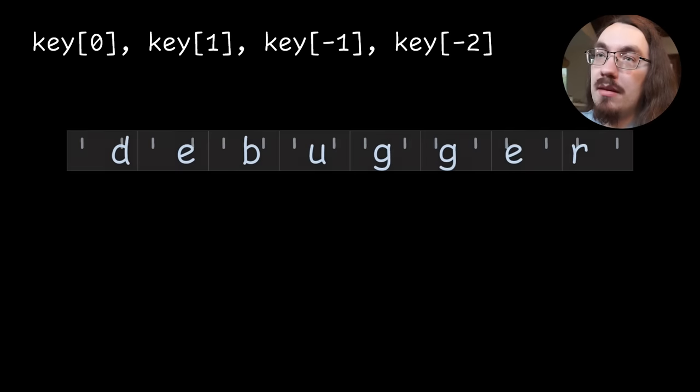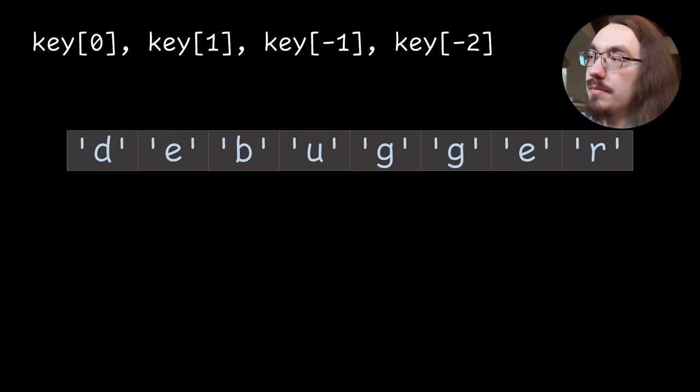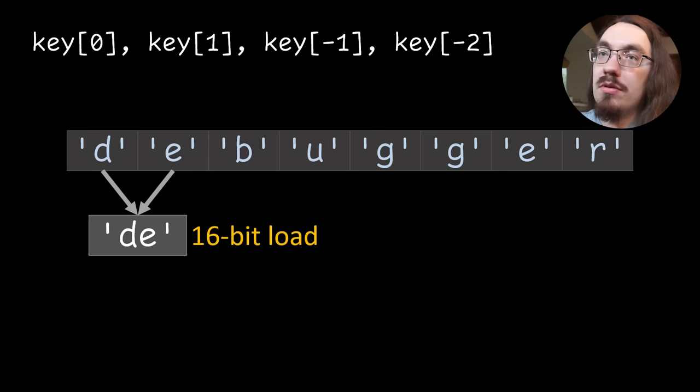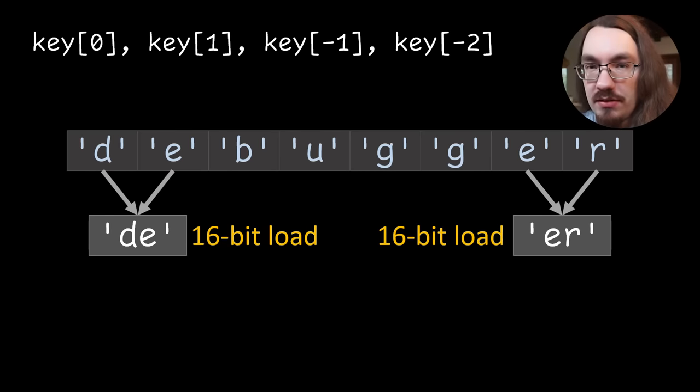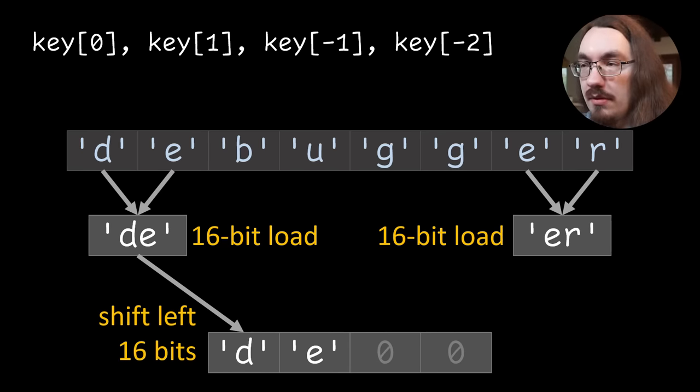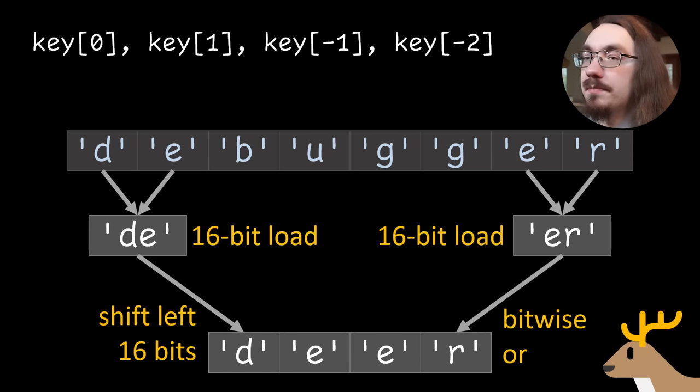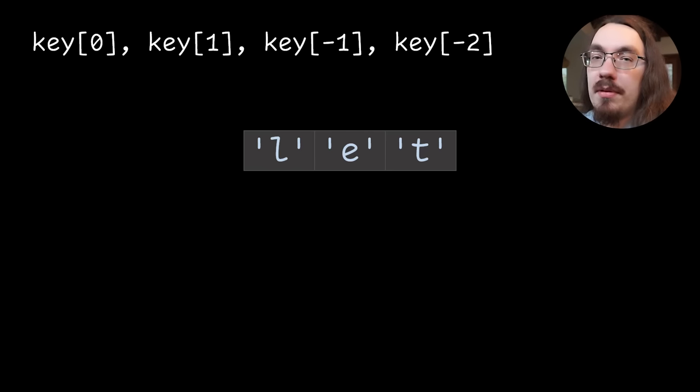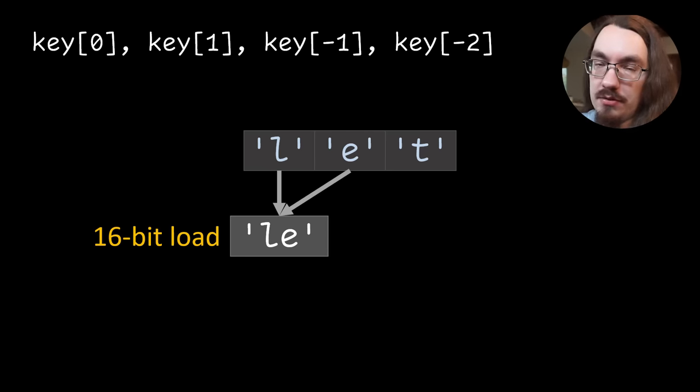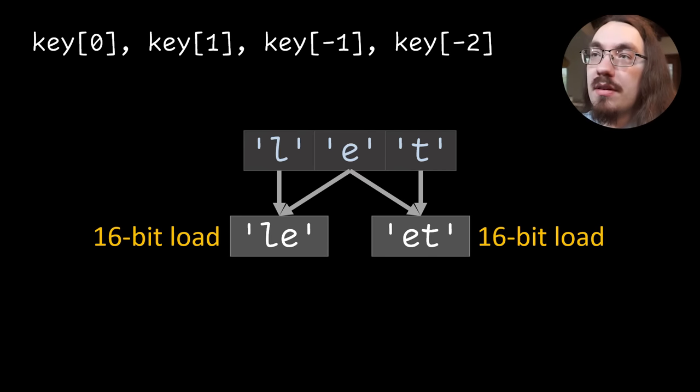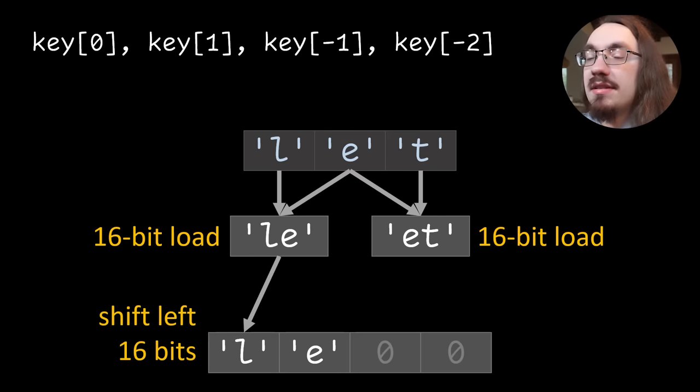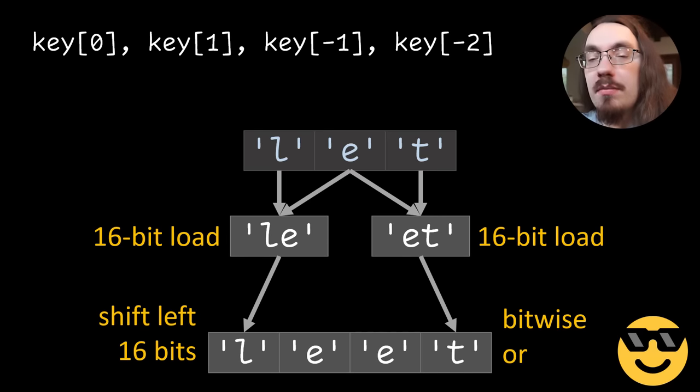Say we have the keyword debugger. Now this is split into a bunch of different characters. What we would do to select the first two characters is do a 16-bit load, 16 bits meaning two bytes. And for the last two characters, we would also do a 16-bit load. Now our index is a single number, not two numbers. So we need to pack all of these characters into one number. So what we could do is shift one of the pairs up 16 bits, leaving the remaining bits zero. And then we use a bitwise or to bring the other 16 bits. So we end up with a 32-bit number. Let's look at another example, like the let keyword. We do a 16-bit load of the first two characters, and we do a 16-bit load of the last two characters. Now notice the middle character, the e, we load twice, but that's fine. There's no real penalty to loading the same character twice. Then we do the same shift that we did before and the same bitwise or, and we end up with another 32-bit integer.